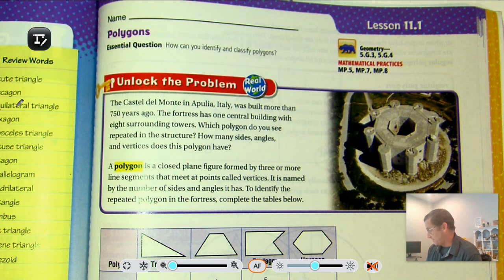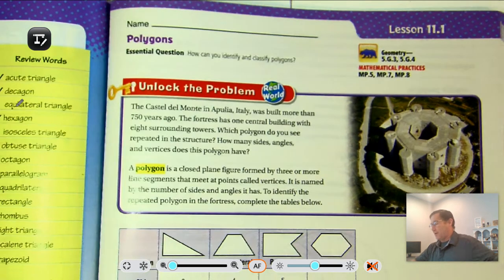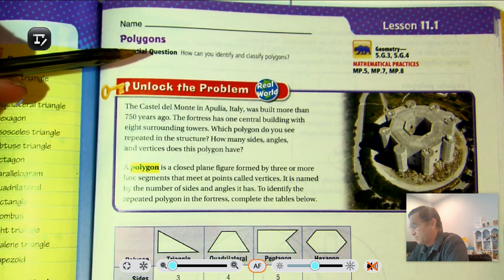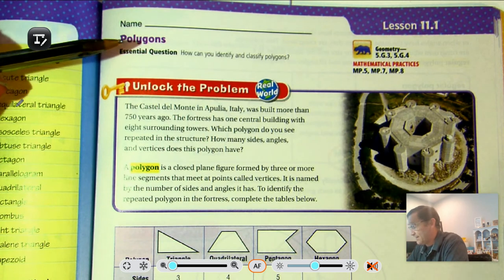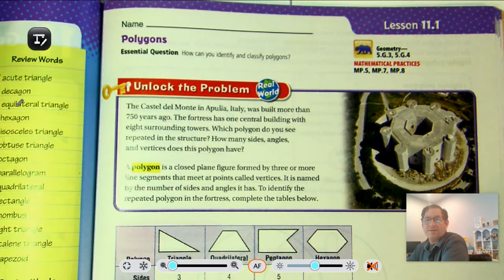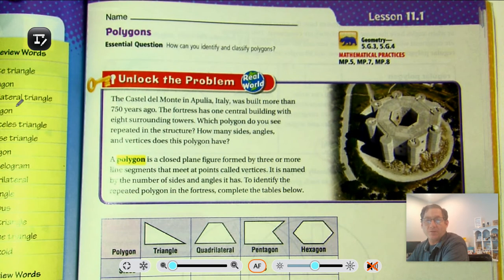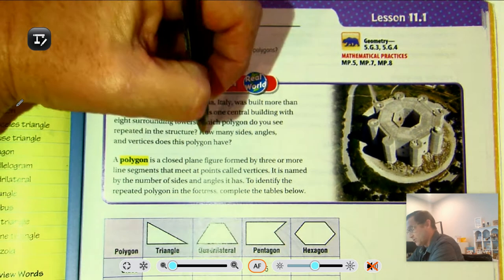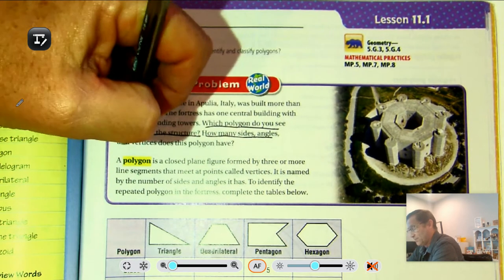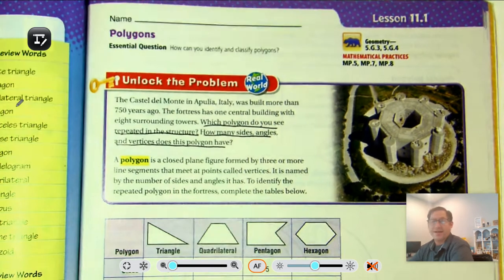We're on page 465 of the fifth grade GoMath textbook. Unlock the problem. The Castel di Monti in Apollia, Italy, was built more than 750 years ago. The fortress has one central building with eight surrounding towers. Which polygon do you see repeated in the structure, and how many sides, angles, and vertices does this polygon have?